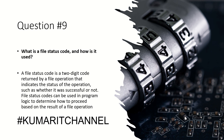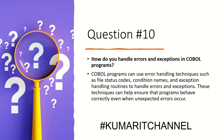For example, in a manufacturing company managing inventory data: a file status code could be used to determine whether a write operation was successful or not, and the program could use this information to take appropriate action, such as displaying an error message or retrying the operation.